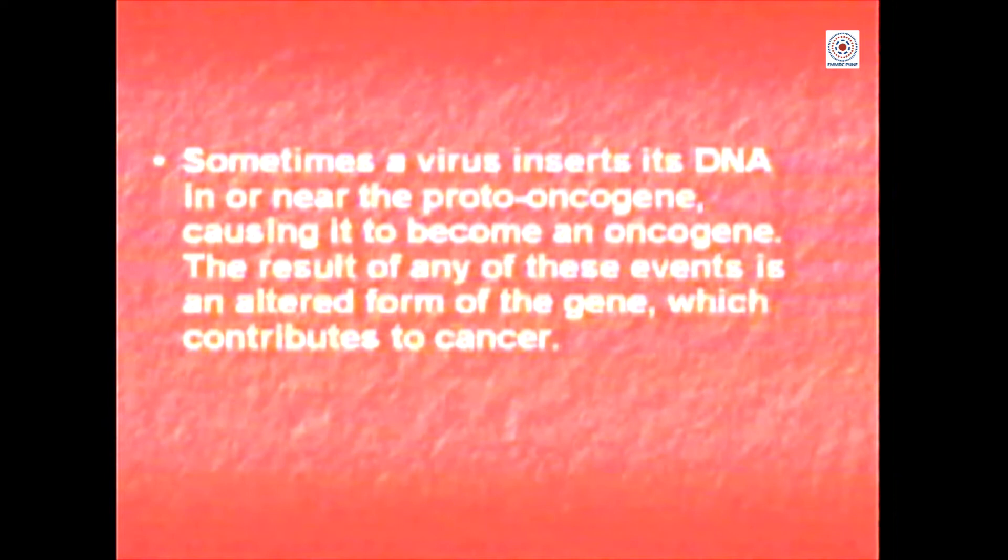Sometimes a virus may integrate near an oncogene or near a proto-oncogene and stimulate its expression — because of this insertion it has been found that you can also get tumours. This figure nicely depicts how retroviruses can cause tumours. They have LTRs, GAG, POL and envelope, and within them they sometimes carry a tumour gene or oncogene. When the virus infects the cell, this RNA becomes DNA, gets integrated in the genome, and converts a normal cell into a cancer cell — thus the RNA tumour viruses cause cell transformation.